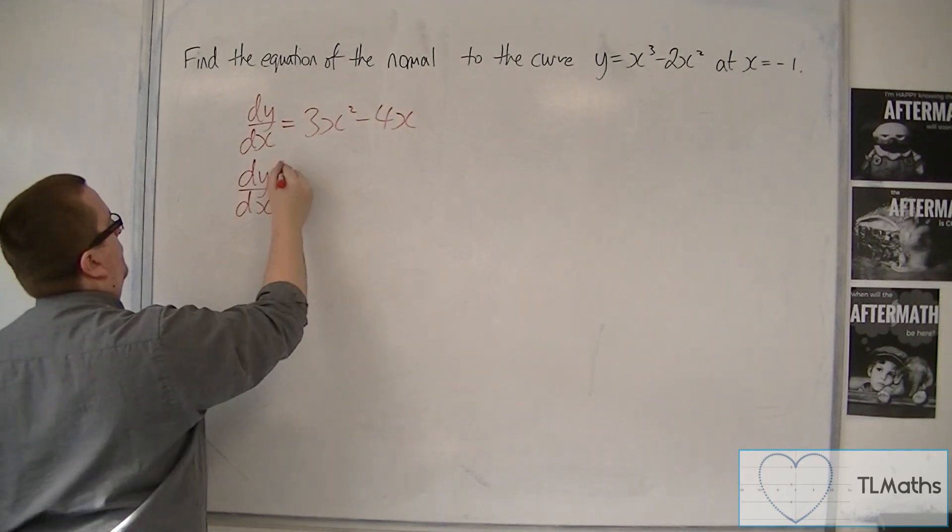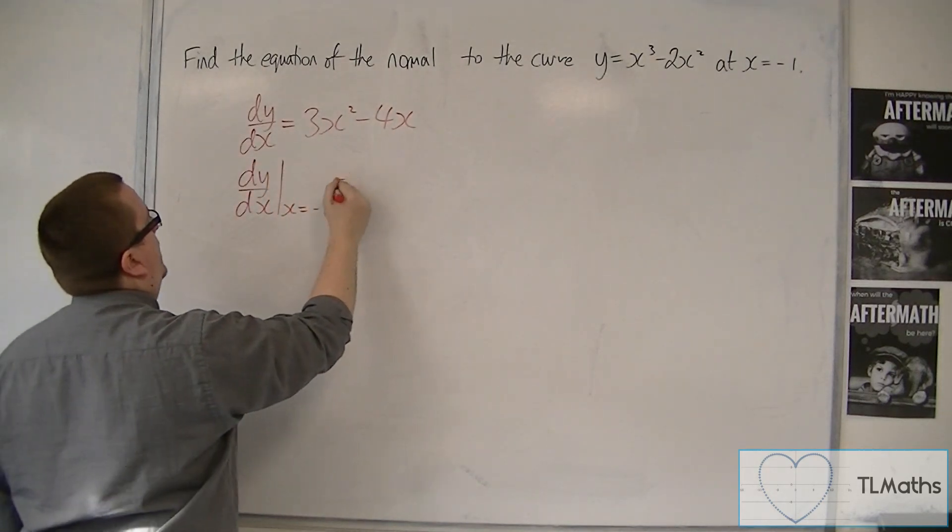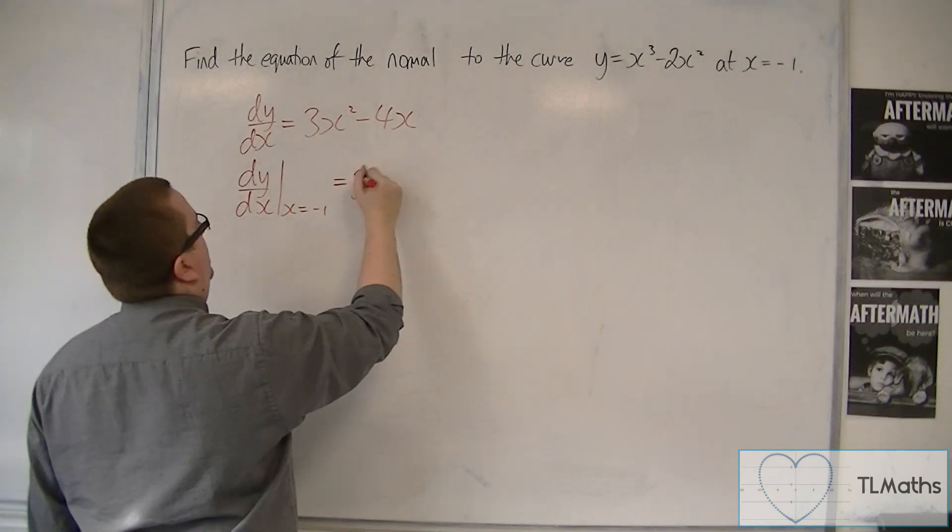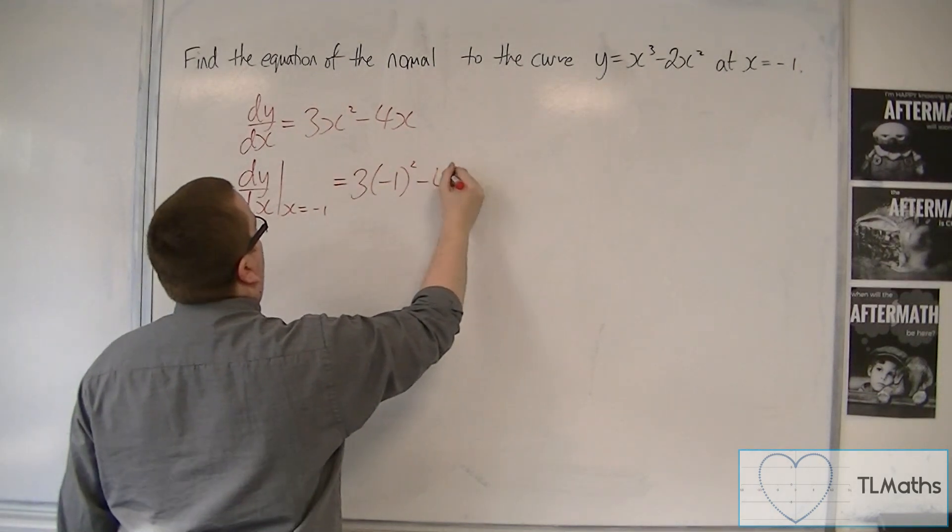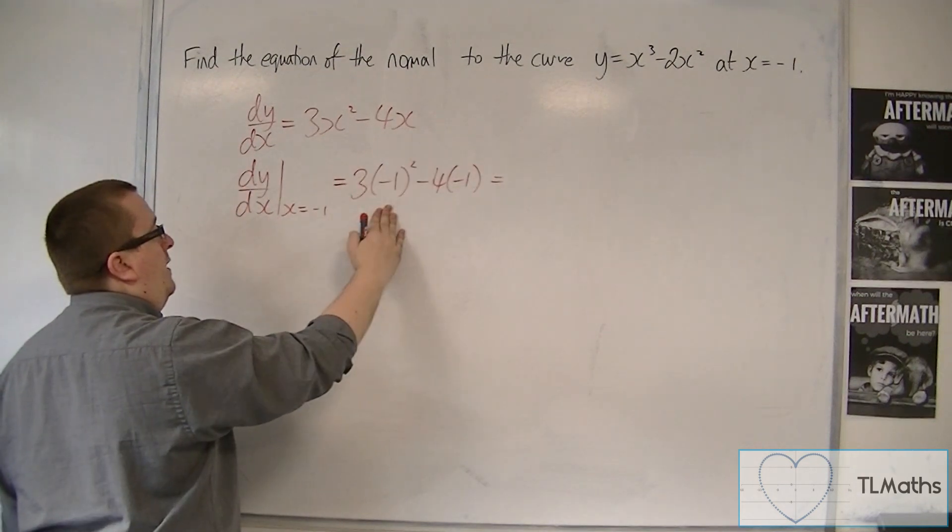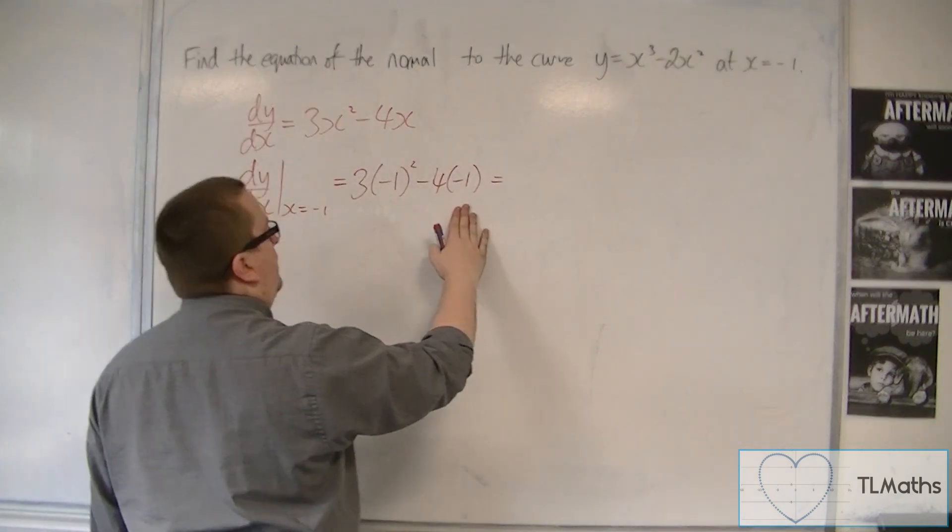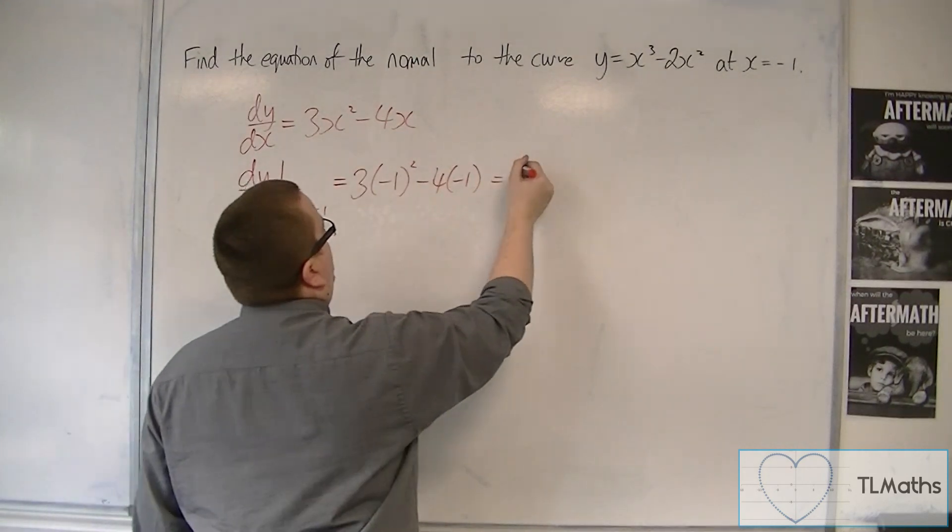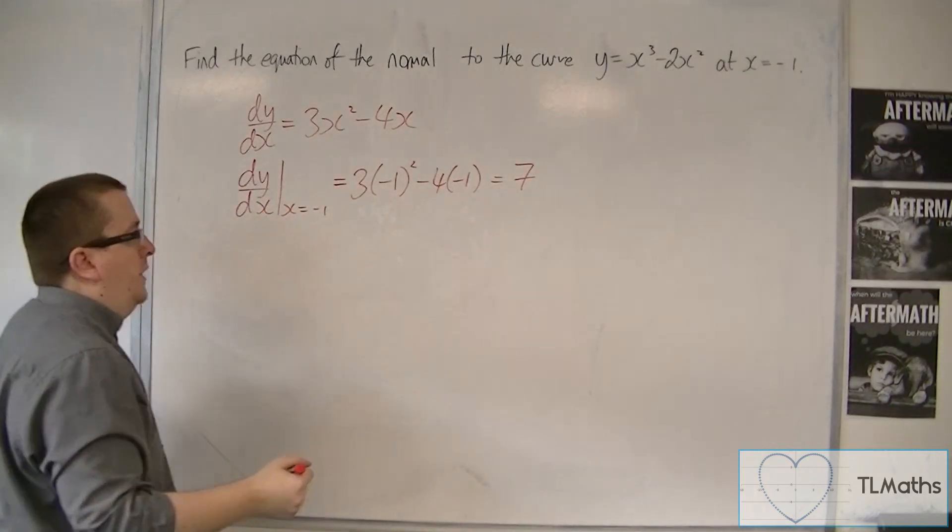So dy by dx when x equals minus 1 is equal to 3 lots of minus 1 squared, take away 4 lots of minus 1. So we have 3 lots of 1, take away 4 lots of minus 1. So we've got 3 plus 4, and so that's 7.